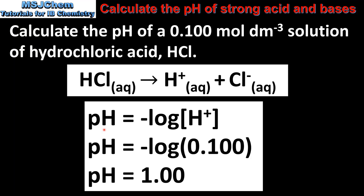We will use the equation: pH = −log[H⁺]. The concentration of hydrogen ions is the same as the concentration of the hydrochloric acid, which is 0.100 mol dm⁻³. So when we take the negative log of 0.1 we get a pH of 1.00.